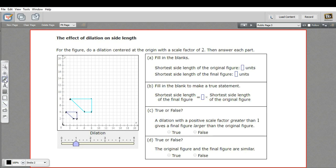Let's see if we can answer some questions now. It says fill in the blanks: the shortest side length of the original figure is what? Well, that's this one, that's one unit. The shortest side length of the final figure? Well, that would correspond to this side, so that's two units.